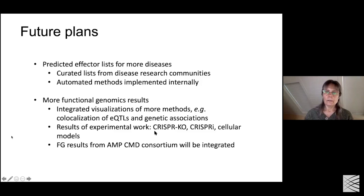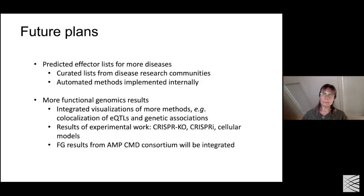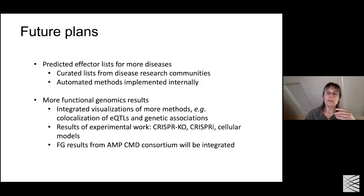For functional genomics, we also plan to add results of experimental work such as CRISPR knockouts. Our consortium has morphed from AMP T2D into AMP Common Metabolic Diseases. Along with this project there are awards, including some at the Broad, to collaborators to generate functional genomic results for potential effector genes for type 2 diabetes, and they'll be doing a lot of this functional work with results integrated into the portal.